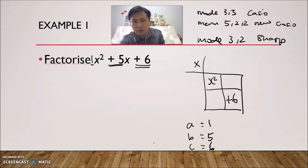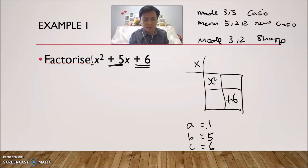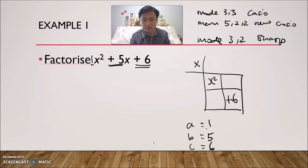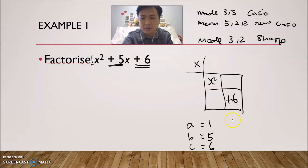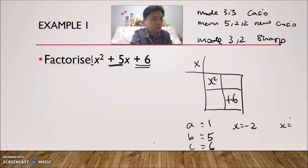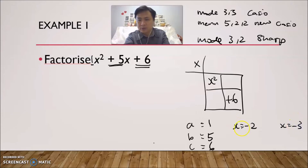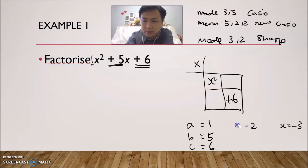Key in all these values into your calculator and press equals after each entry. Enter A = 1, press equals; B = 5, press equals; C = 6, press equals. After entering all numbers, you'll get two results: x = −2 or x = −3. I'm only interested in these two numbers — don't worry about the x.